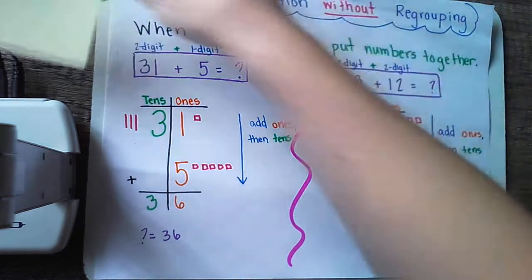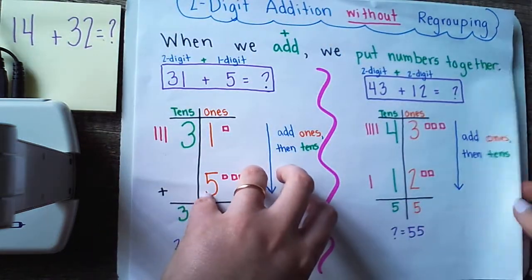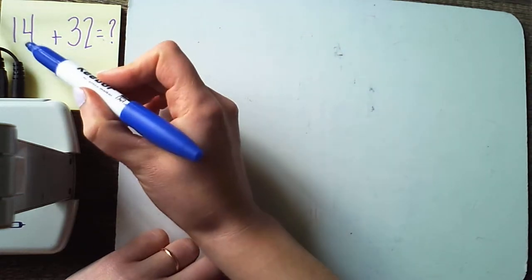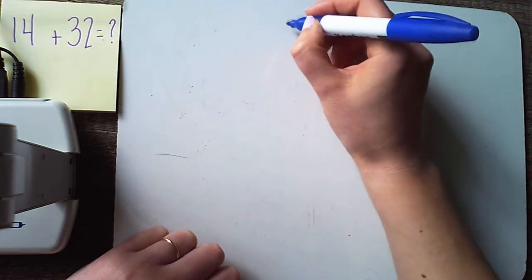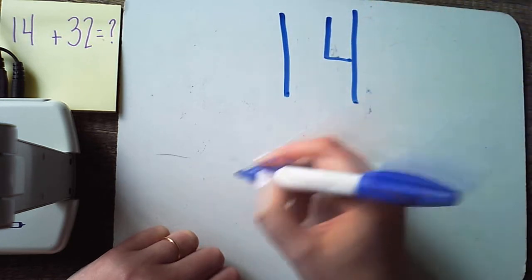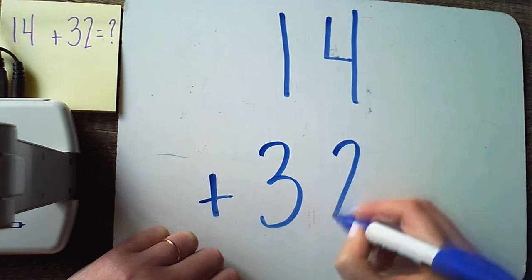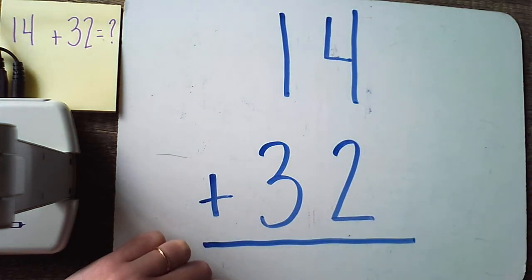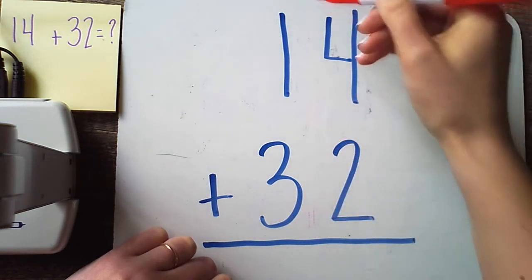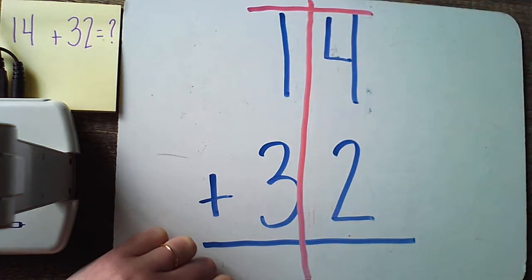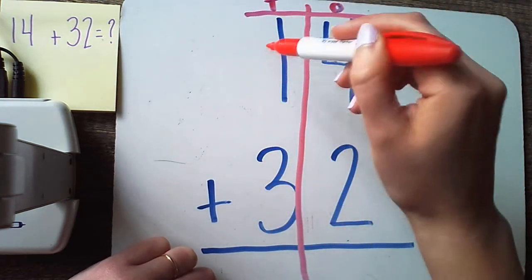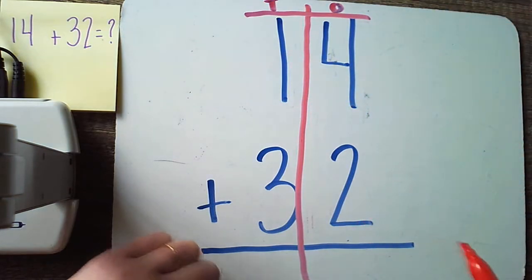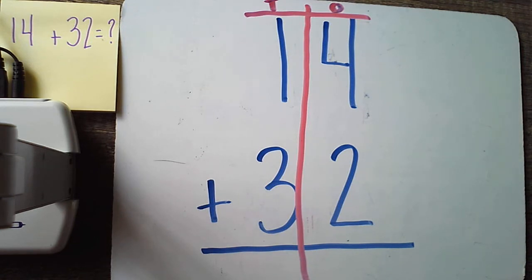Here's our first problem: we're gonna be working on 14 plus 32. You can write your addition problems horizontally, or you can also write them vertically — vertically just means that you're stacking them on top of each other, up and down. I'm gonna write them vertically because that's gonna help me organize my add-ins in my place value chart. Once I've got my add-ins written down vertically, I'm going to add in my place value chart, remembering that T stands for tens and O is standing for ones. Now I'm using objects today to represent what's happening in these problems and help me solve them easier.